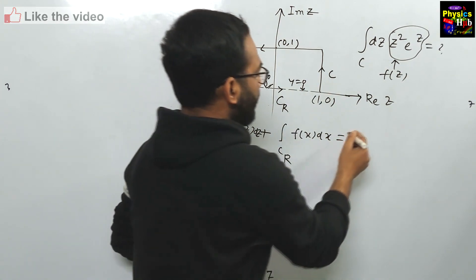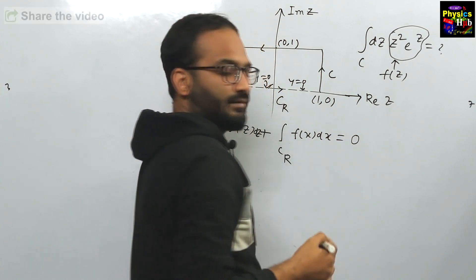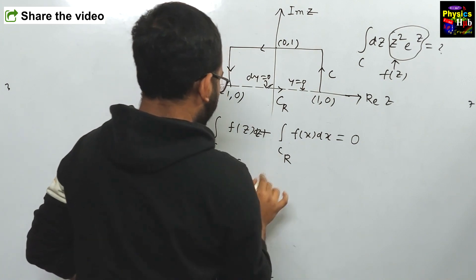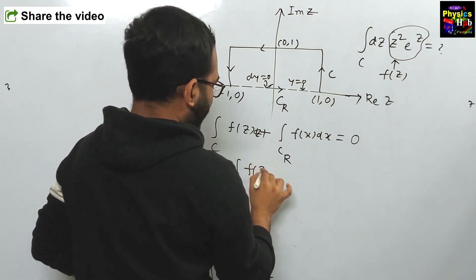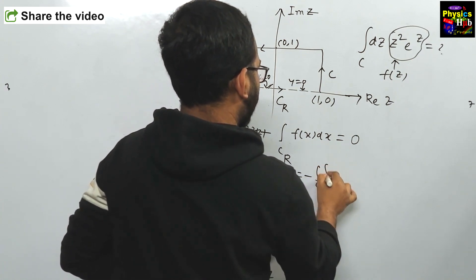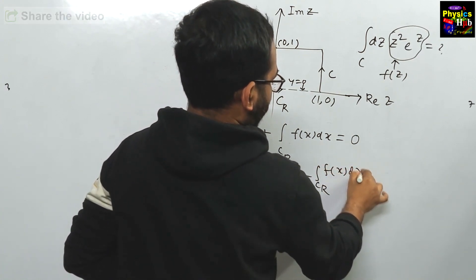As this contour C plus Cr does not contain any pole, according to Cauchy's residue theorem, this will be 0.